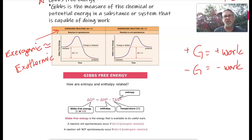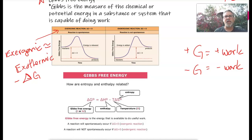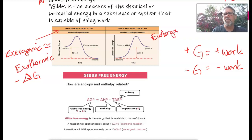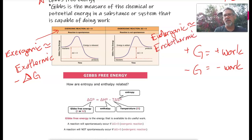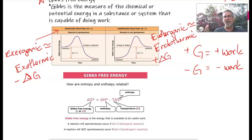Exergonic — where 'gonic' means energy — is roughly equal to exothermic. My products have less energy than my reactants; if they've lost energy, my delta G is less than zero, so delta G is negative. Endergonic is roughly equal to endothermic. In that case, my products have more energy than my reactants, so the change in G will be positive. There are other things that go into this that we'll discuss later when we talk about equilibrium.